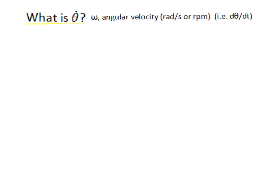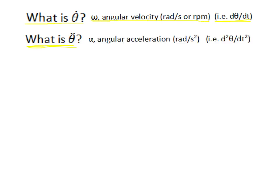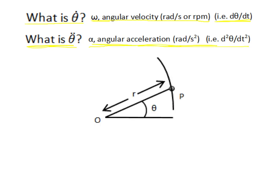Before we jump in, some definitions. Theta dot is the rate of change of theta, or the angular velocity in radians per second. Theta double dot is the angular acceleration — that's the rate at which it's accelerating as it goes around.